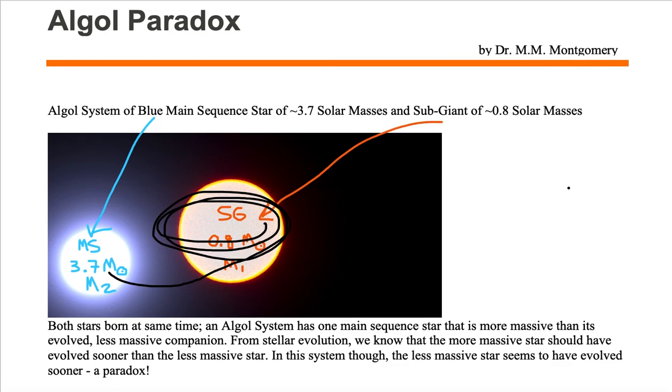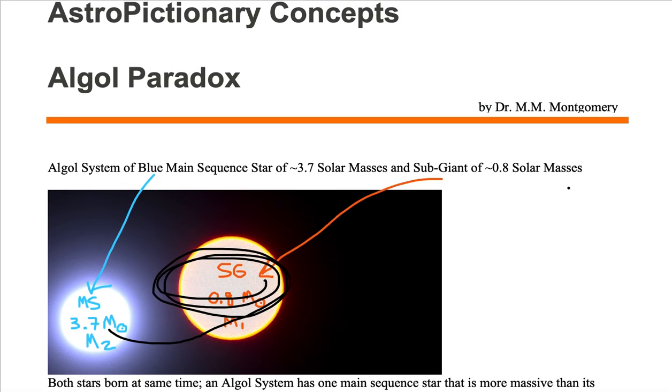So right now, in this Algol system, we find a main sequence star that is more massive than its companion star, which is an evolved star. And the paradox comes in because the evolved star should be the more massive object. But it isn't when we see it at this time in this binary star evolution.